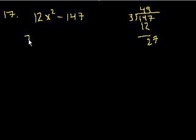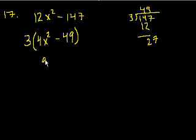So then it becomes 3 times, what's 12 divided by 3? 4x squared minus 147 divided by 3, we just figured out, was 49. And now this, once again, has the property of, it looks just like a squared minus b squared. Where a would be 2x and b would be 7, right? So now we can factor that more.